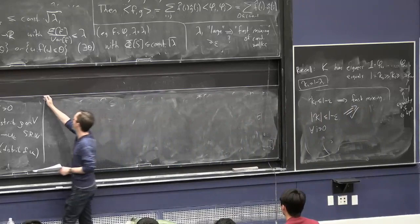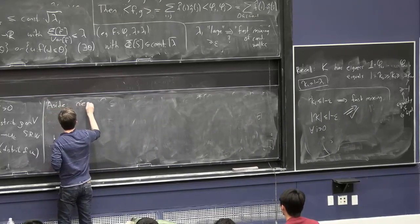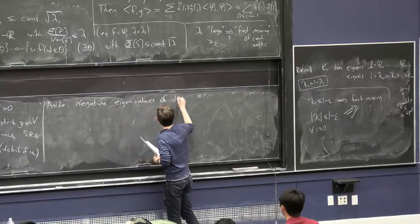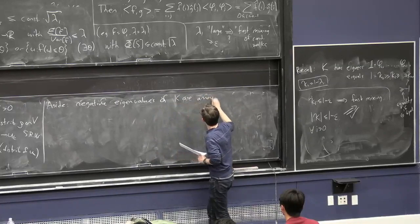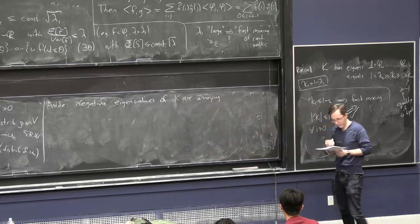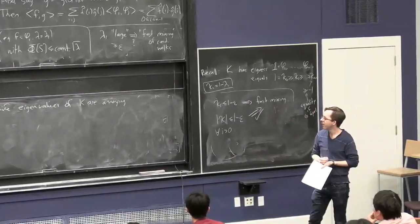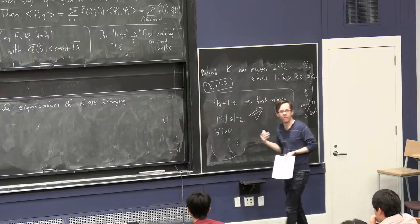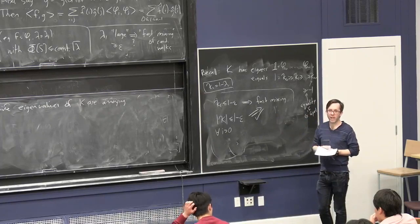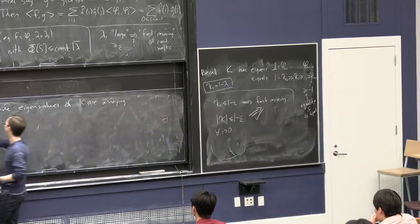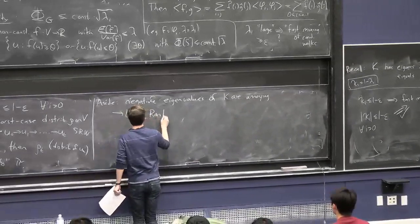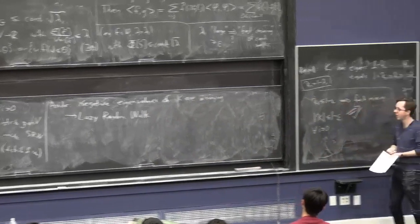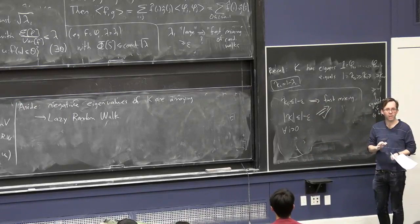Let me make a brief aside about if the negative eigenvalues of K are annoying. There's a hack to get around the annoyance about bipartite graphs and negative eigenvalues, called the lazy random walk hack. On the lazy random walk, at each time step you flip a coin: with probability 1/2 you take a random step along an edge like normal, and with probability 1/2 you don't do anything — you just stand still.